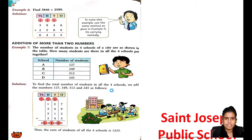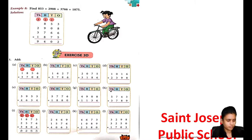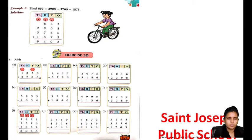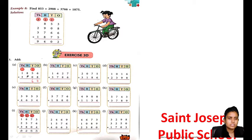Now come on to exercise 3D. It is addition with carrying. 6 plus 8 is 14, 1 carry. 1 plus 5 is 6. 7 plus 7 plus 8 — how much? Tell me: 15, 1 carry.